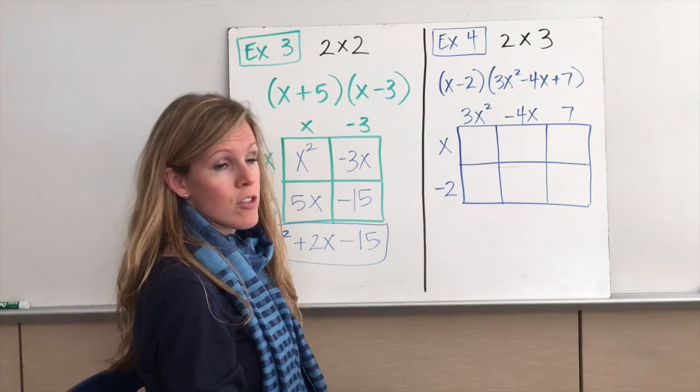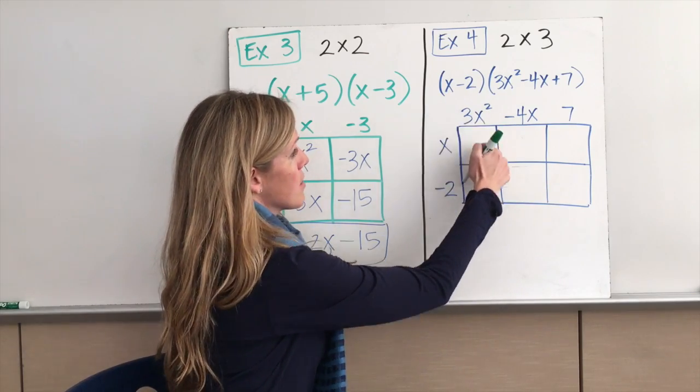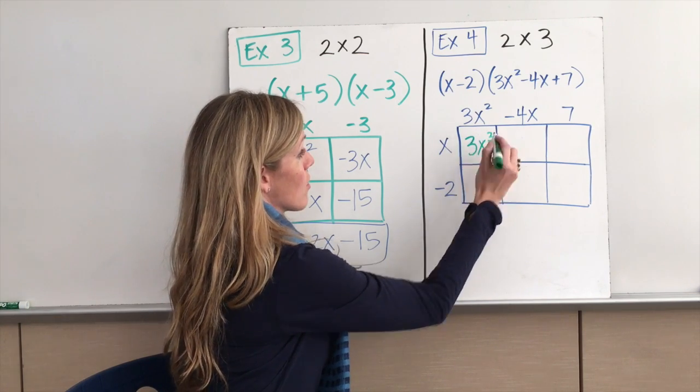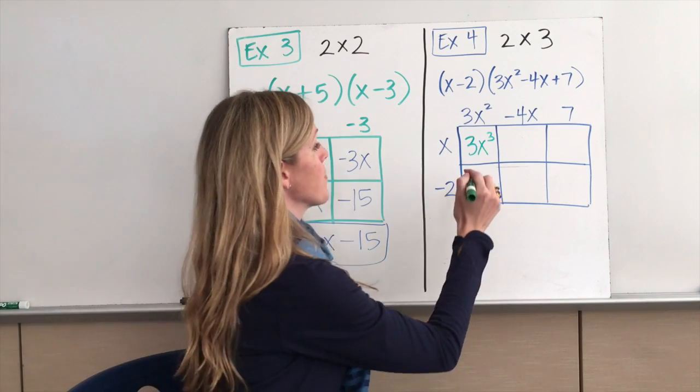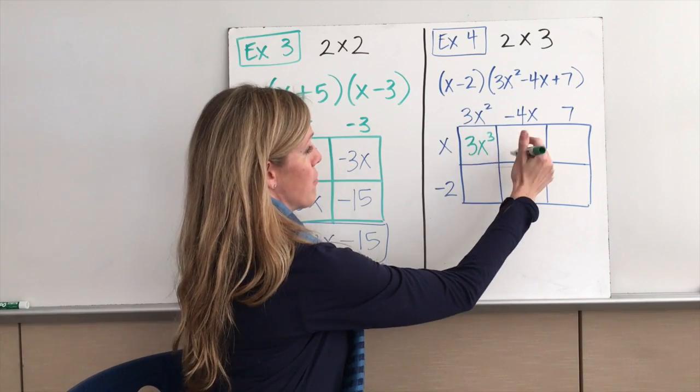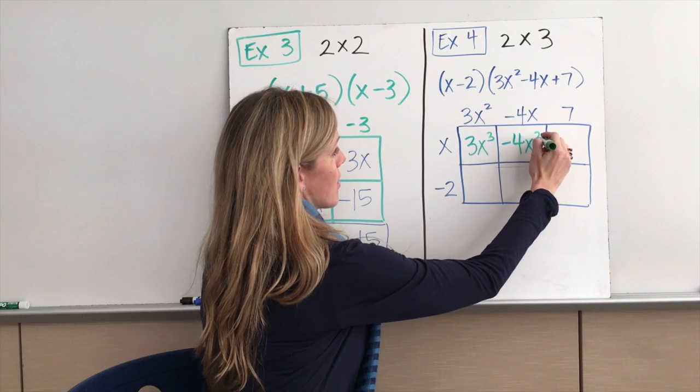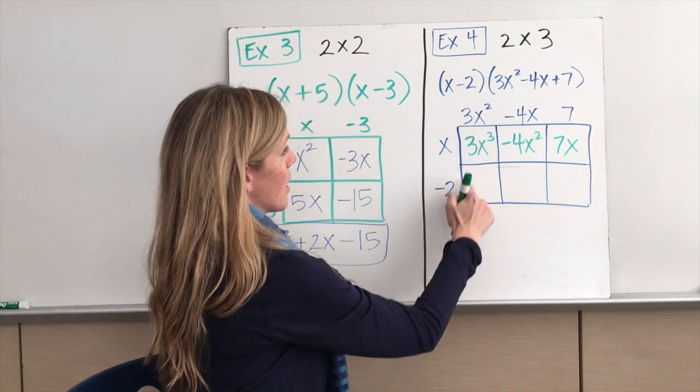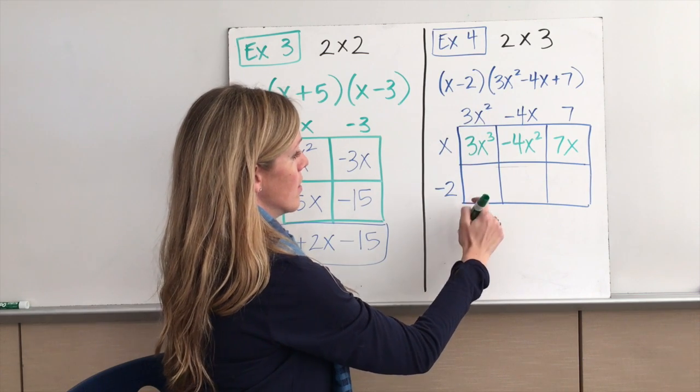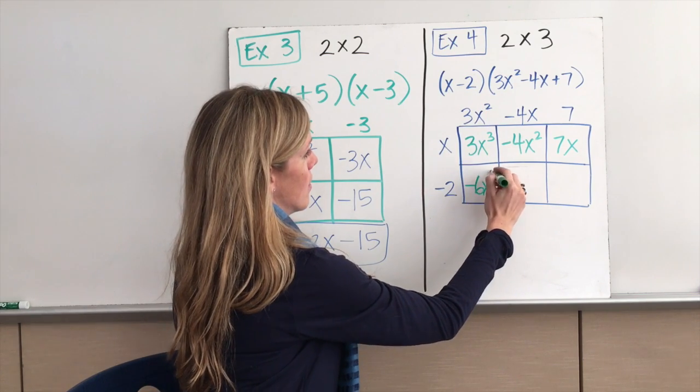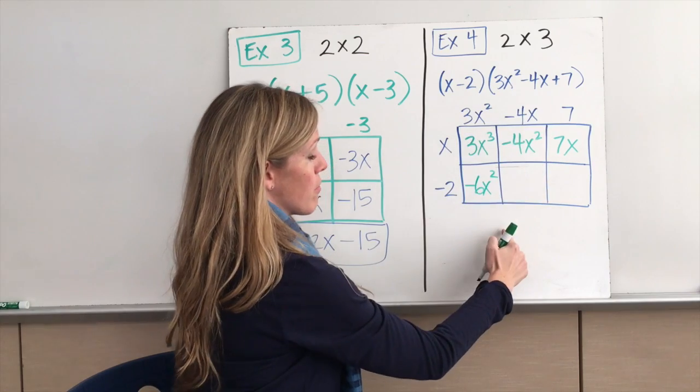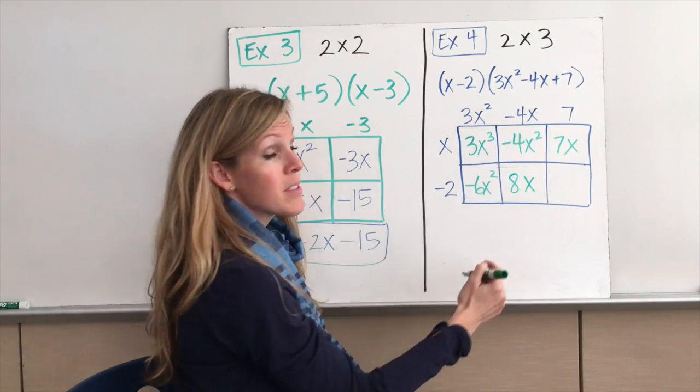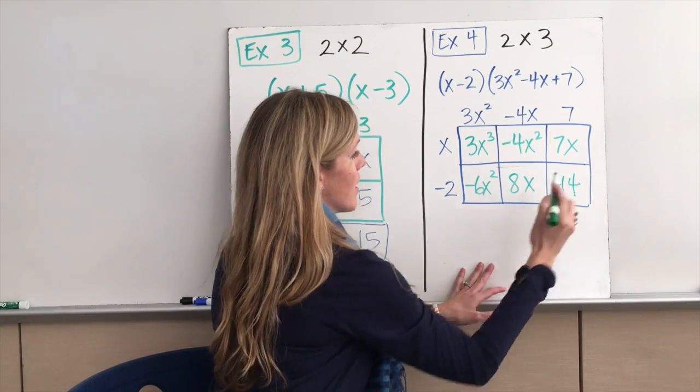Now I'm going to multiply all of these terms together. So x times 3x² is 3x³. Right, Ms. Pariseau? Yes. x times -4x. -4x². Correct. x times 7. Positive 7x. -2 times 3x². -6x². And -2 times -4x. 8x. Positive. Correct. -2 times 7. -14. All right.